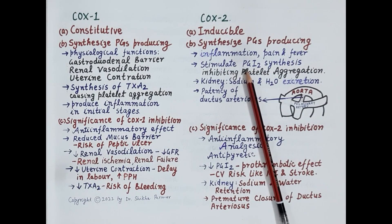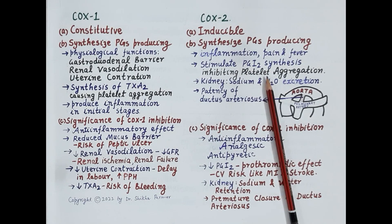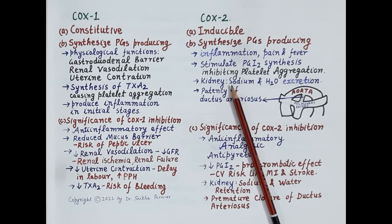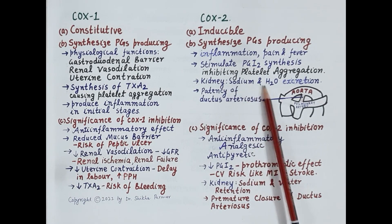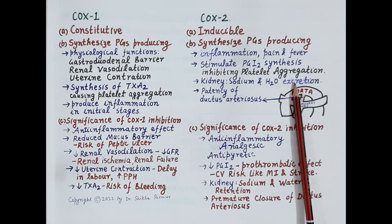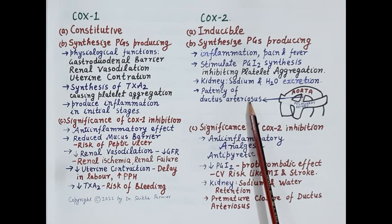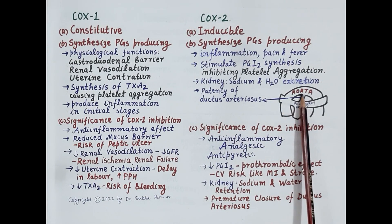COX-2 also shows important physiological functions. It stimulates release of prostacyclin, that is PGI2, from the endothelium. Prostacyclin inhibits platelet aggregation, prevents formation of thrombus, and therefore reduces the risk of myocardial infarction and stroke. In kidneys, COX-2 mediates synthesis of prostaglandins that cause sodium and water excretion.